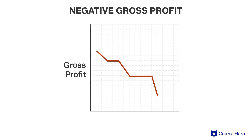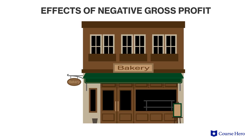If a company has negative gross profit, it shows the company is selling goods below cost. For this reason, a negative gross profit is a strong indicator that a company will not last much longer in the marketplace unless this problem can be solved.